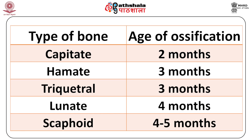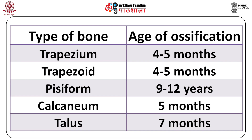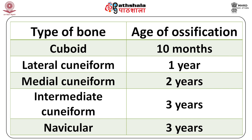For the carpal bones: the capitate ossifies at two months, the hamate at three months, the triquetral at three months, the lunate at four months, the scaphoid at four to five months, and the trapezium and trapezoid also at four to five months. For the foot bones: the calcaneum at five months, the talus at seven months, the cuboid at ten months, the lateral cuneiform at one year, the medial cuneiform at two years, the intermediate cuneiform at three years, and the navicular also at three years.